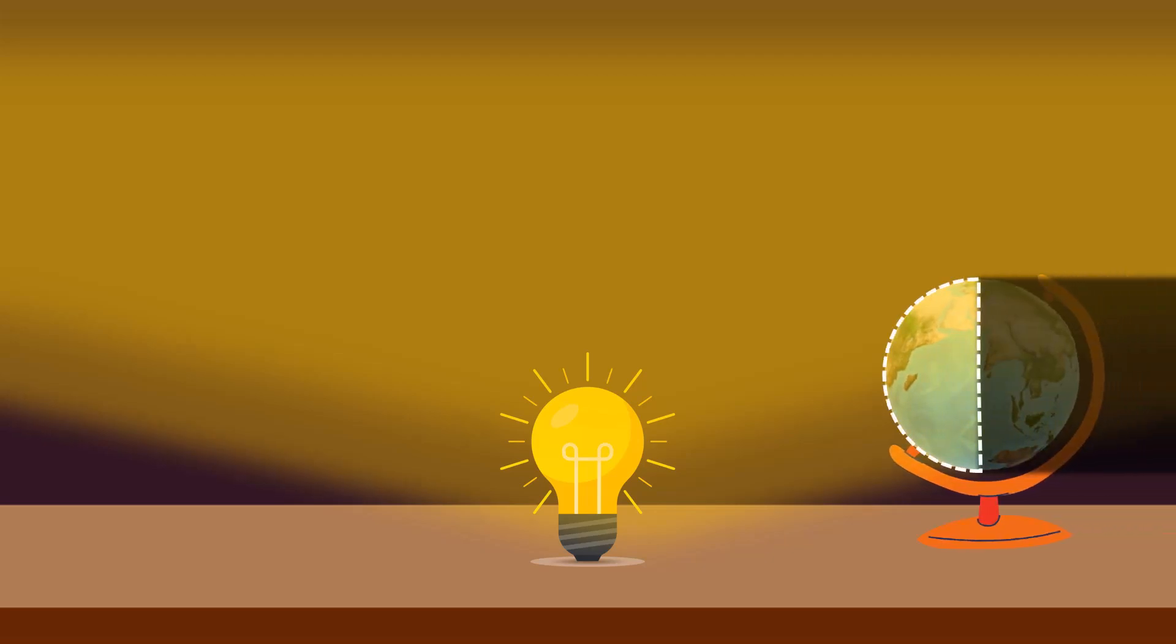Only one side of the globe lights up. That's day. The other side has night. Spin the globe slowly. Different parts get light. That's day and night.